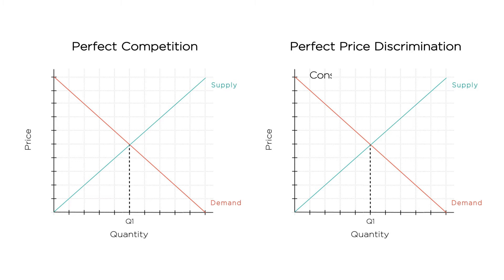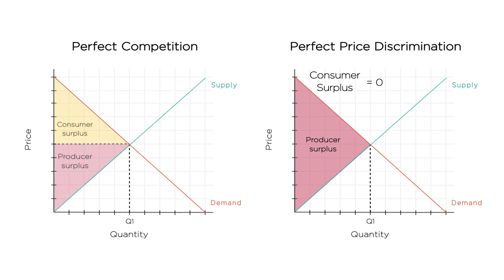What about welfare? Consumer surplus is now zero — each consumer is being charged a price exactly equal to her willingness to pay. The producer is getting all the surplus from each sale, totaling this entire area here. You can see that the producer surplus area for the price discriminating monopolist is the exact same area we had for the sum of consumer and producer surplus in the competitive market. With perfect price discrimination, there's no deadweight loss. Social welfare is maximized, even if it all goes to the producer. Though this price discrimination maximizes social welfare, something about consumers not getting a penny of that surplus may not seem fair. Often, we'll likely care about the distribution of this surplus between consumers and producers. We'll come back to this when we discuss issues of equity or fairness later in the course.